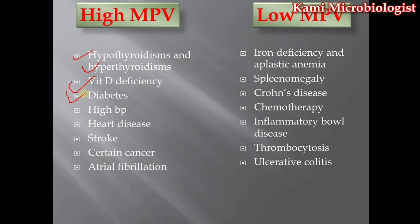Diabetes — meaning high sugar or high glucose levels in the blood — is another cause. In diabetic cases we have elevated carbohydrates, which are used by platelets; as platelets take in carbohydrates they divide, so the mean platelet volume gets high. In high blood pressure, the elevated pressure affects the blood vessels, which in turn affects the bone marrow, causing platelet numbers to increase and eventually causing high MPV.